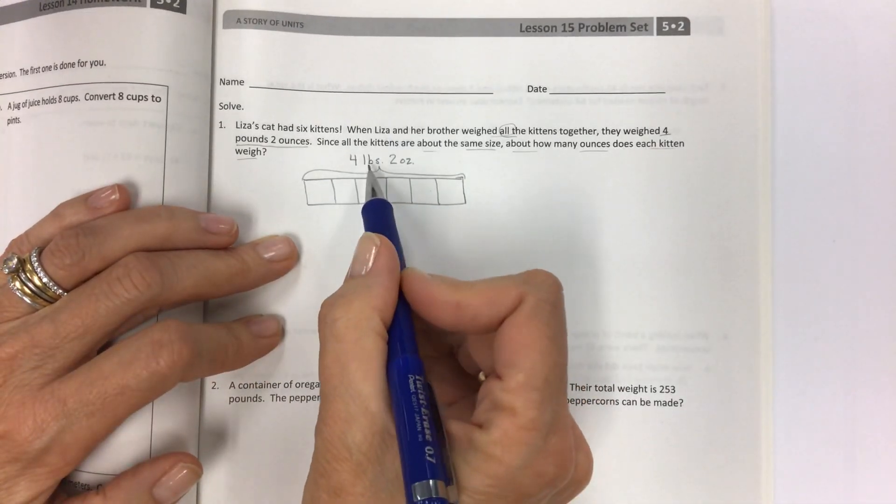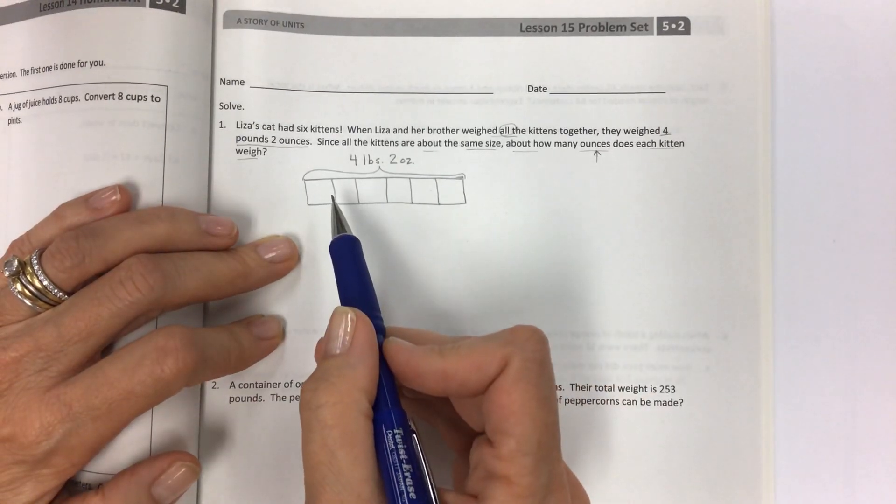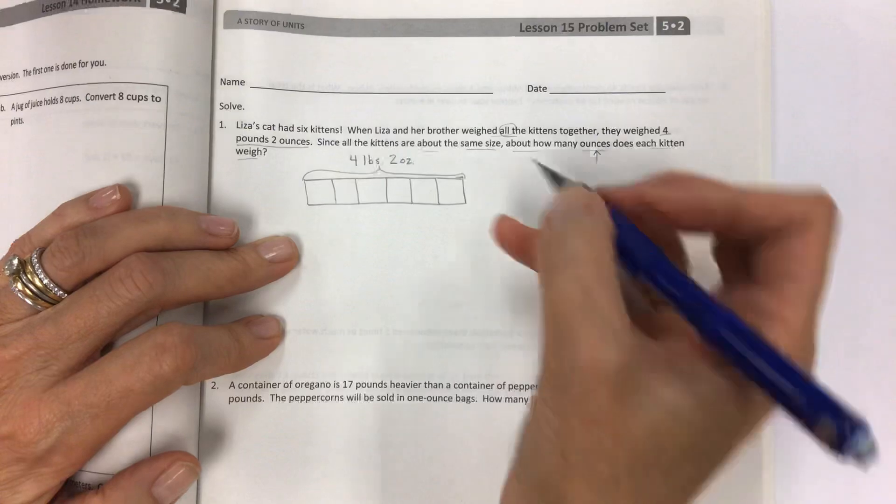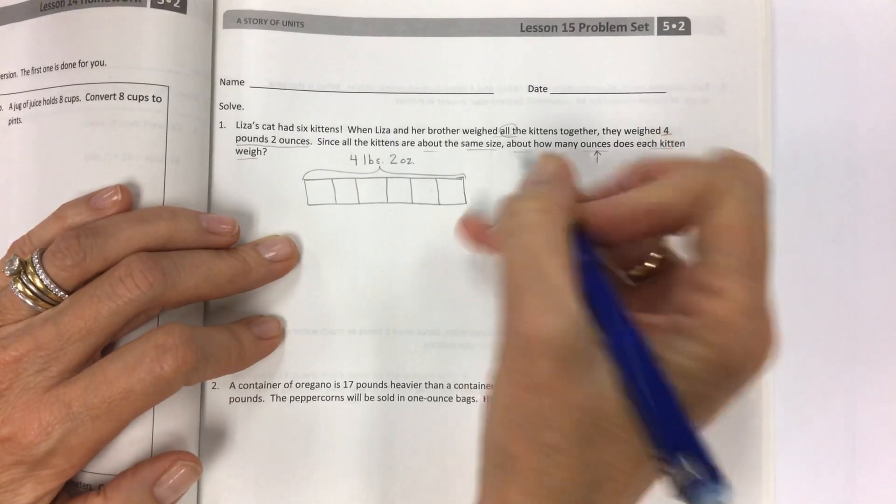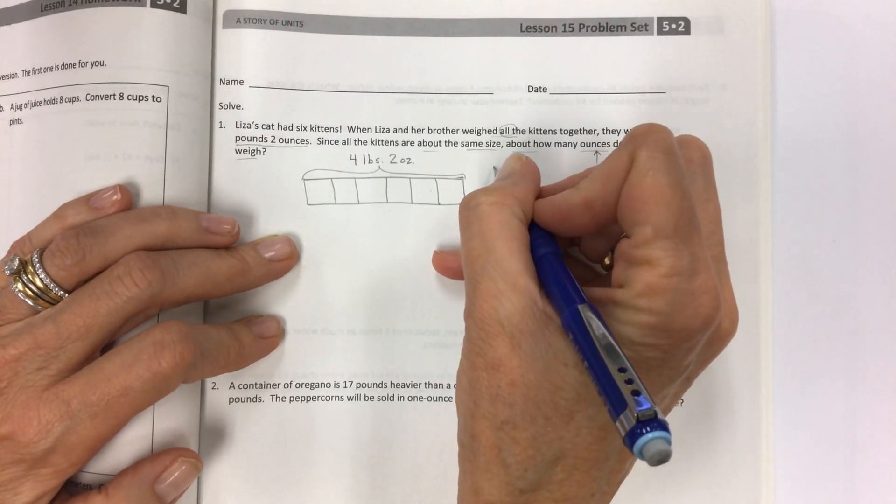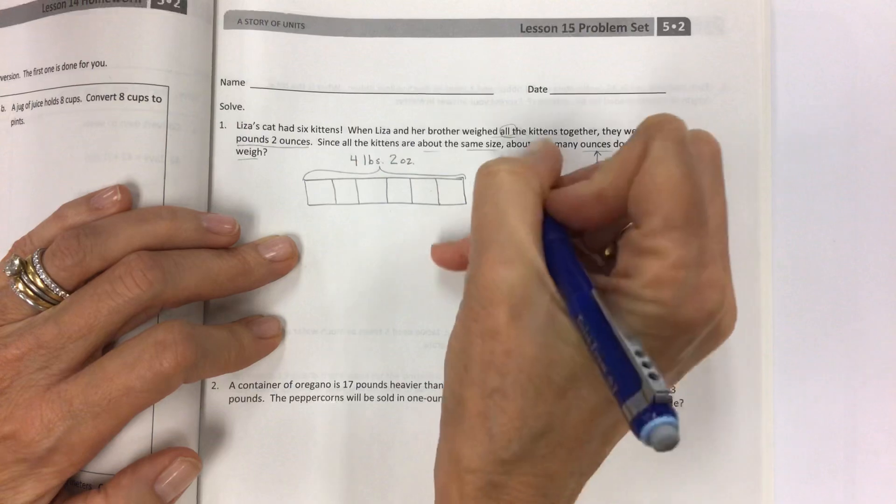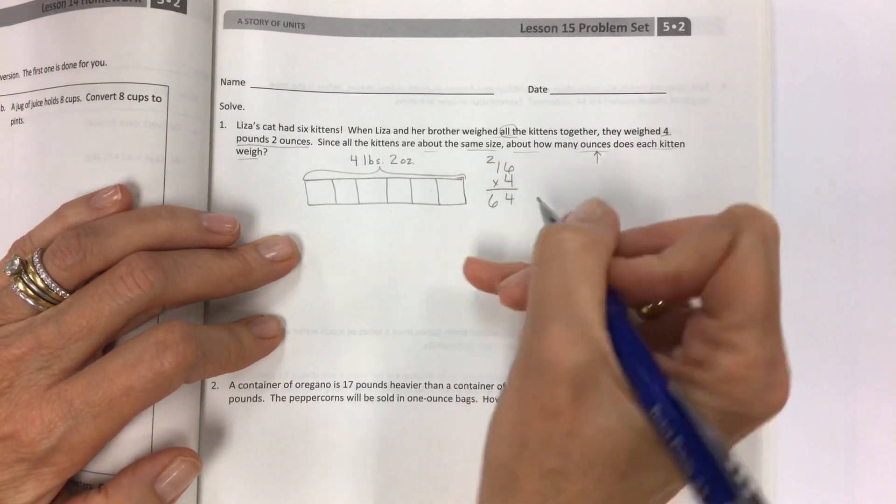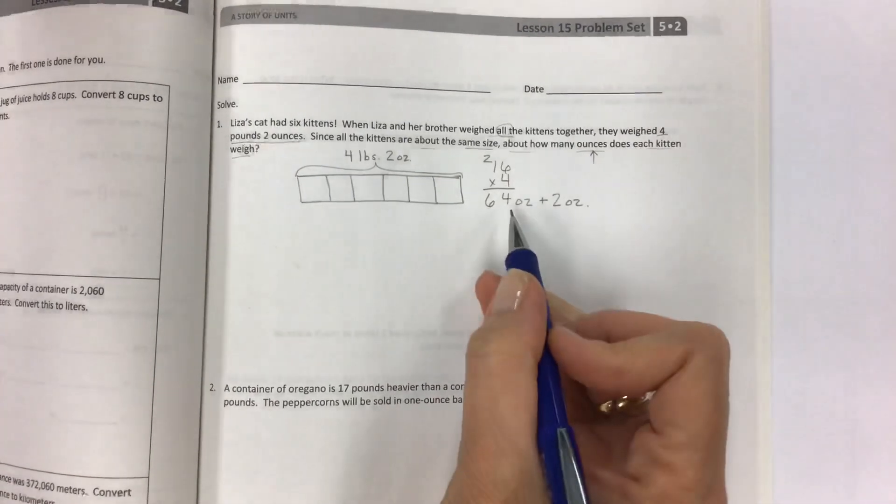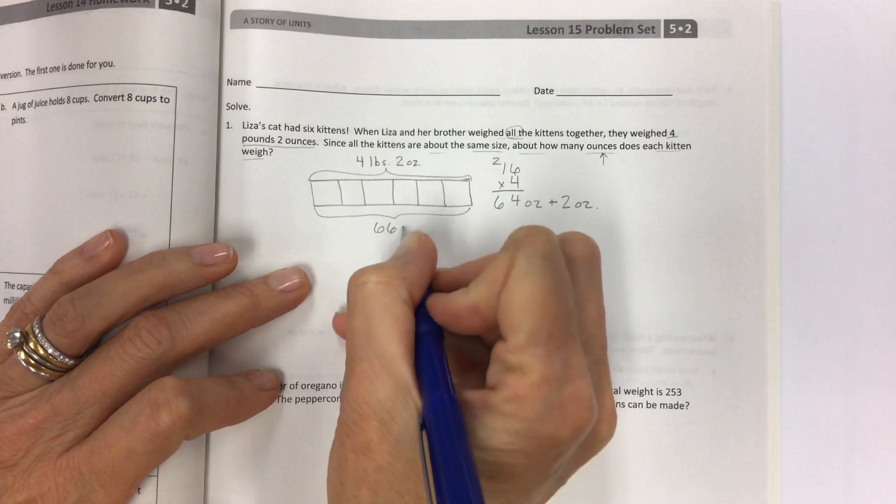The total amount for the kittens is four pounds, two ounces. So first of all, I need to make sure that I put everything in ounces first so that when I get my answer, it's going to make sense. So I need to figure out how many ounces are in four pounds. It's 16 ounces per pound. So just take your 16 times 4 and multiply. This is going to be 64 ounces from the four pounds, but I also have to add the two ounces that are extra. So all the kittens together is 66 ounces.